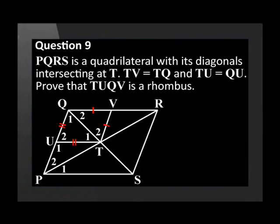PQRS is a quadrilateral with its diagonals intersecting at T. The length of TV is equal to the length of TQ, and the length of TU is equal to the length of QU. Prove that TUQV is a rhombus.